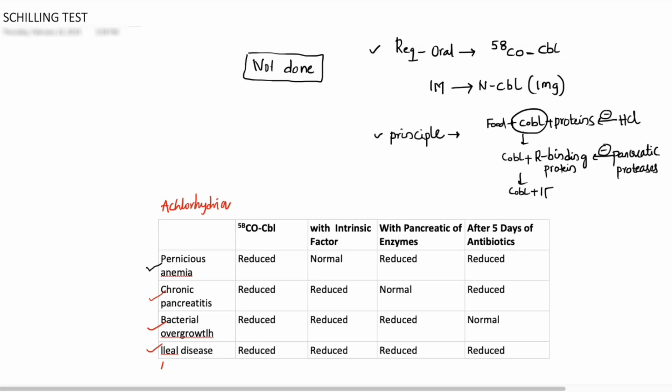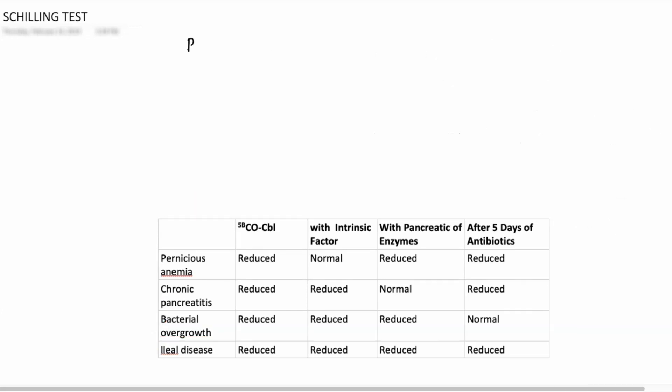And this cobalamin binds with intrinsic factor. What is the need for it to bind? Why is it important for intrinsic factor to bind to cobalamin? Because this is how absorption occurs. With the help of Schilling test, you can identify at which location or which step there are issues with vitamin B12 absorption. So it only tells you the vitamin B12 absorption defects.